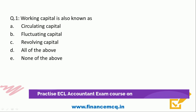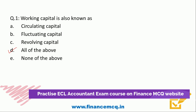First question: working capital is also known as — option A: circulating capital, option B: fluctuating capital, option C: revolving capital, option D: all of the above, option E: none of the above. All of the above are the correct answer.